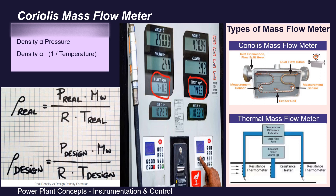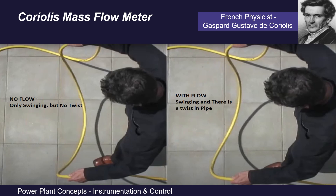Now if we need direct mass flow measurement instead of doing all these conversions in the DCS, we may use mass flow meters. From these discussions it is clear that mass flow meters must not only measure the flow volume but also measure fluid density so that they can directly give readings in terms of mass flow.